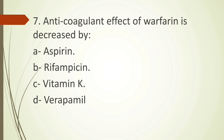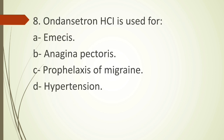Seventh question: anticoagulant effect of warfarin is decreased by — option A aspirin, option B rifampicin, option C vitamin K, option D verapamil. The correct answer is option C, vitamin K. Vitamin K can be used as an antidote for warfarin poisoning. As an additional point, for heparin poisoning the antidote is protamine sulfate. I have a video on different antidotes used in pharmacology — please refer to it via the link in the description.